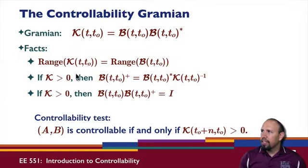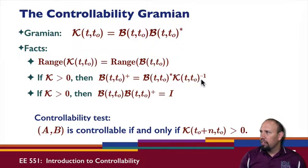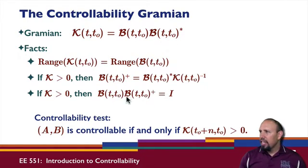If k is positive definite — notice that I have something times its transpose, which is at least semi-definite — it's possible for it to be positive definite, in which case we can actually define the pseudo-inverse of the matrix this way. If k is positive definite, then the control map times the pseudo-inverse is an identity matrix, so the pseudo-inverse is in fact a right inverse.